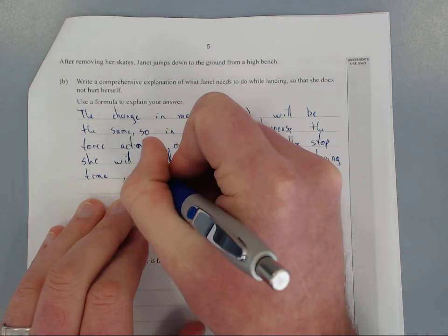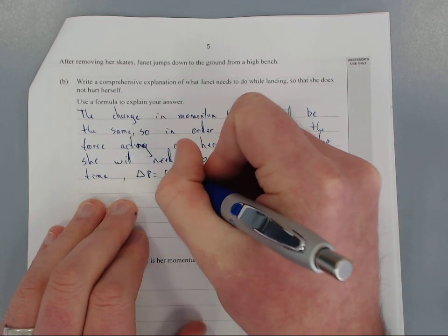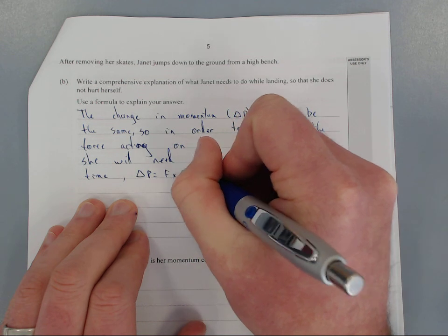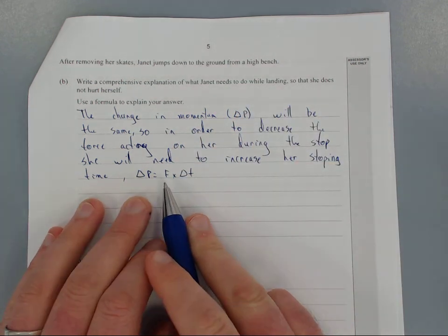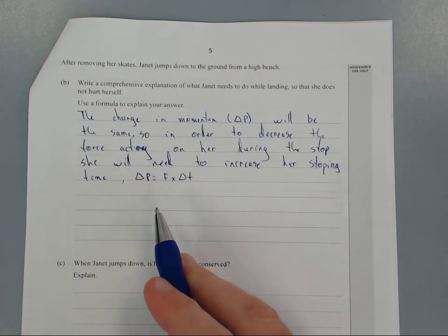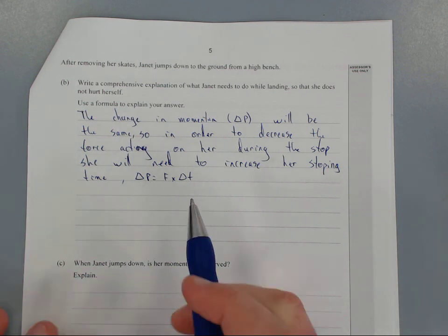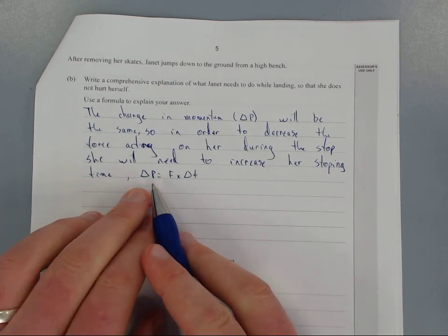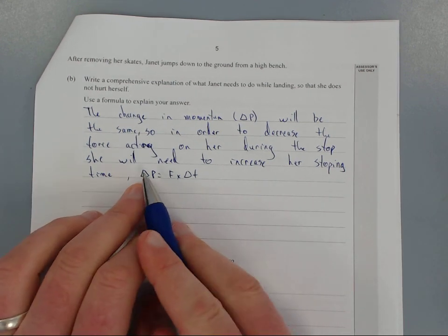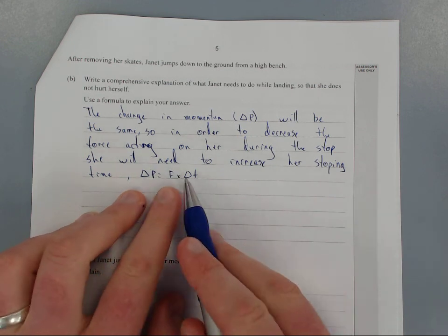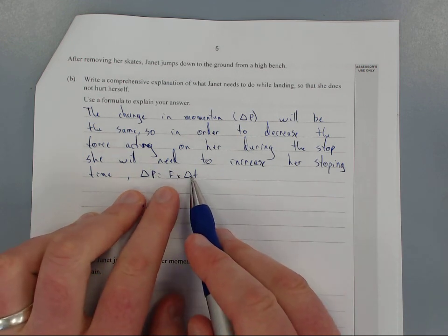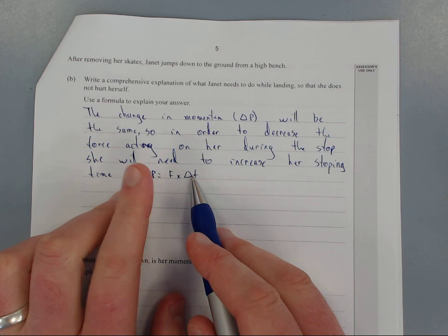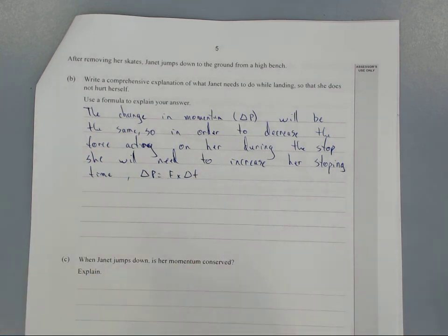The reason is that change of momentum equals the force times the change in time. This is impulse. The impulse is still the same and the change of momentum is still the same, but if she increases the amount of time it means she can decrease the force on her. So she should bend her knees or bend her back.